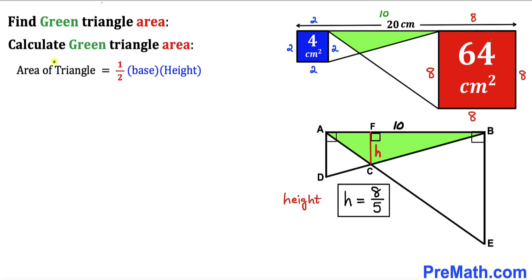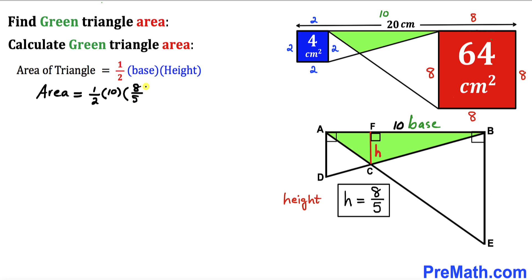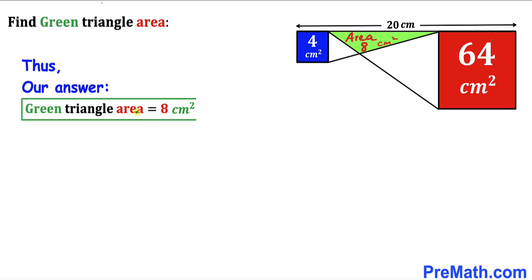Finally, let's calculate the area of the green shaded triangle. Using Area = ½ × base × height, with base = 10 cm and height h = 8/5 cm: Area = ½ × 10 × (8/5) = 8 cm². Thus the area of the green triangle is 8 cm². Thanks for watching — please don't forget to subscribe for more videos.